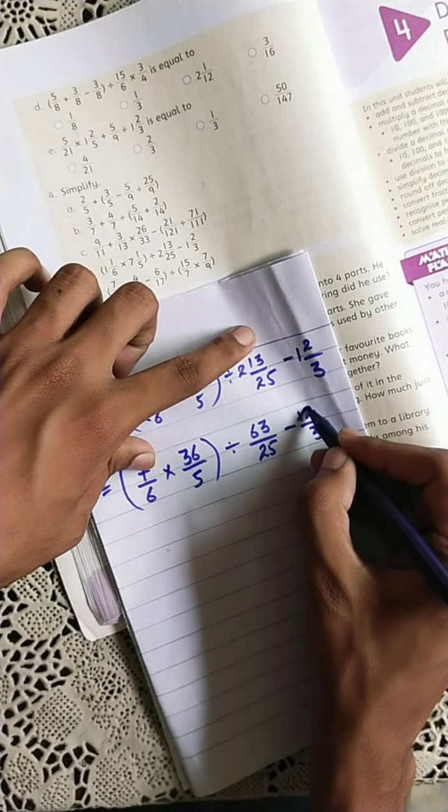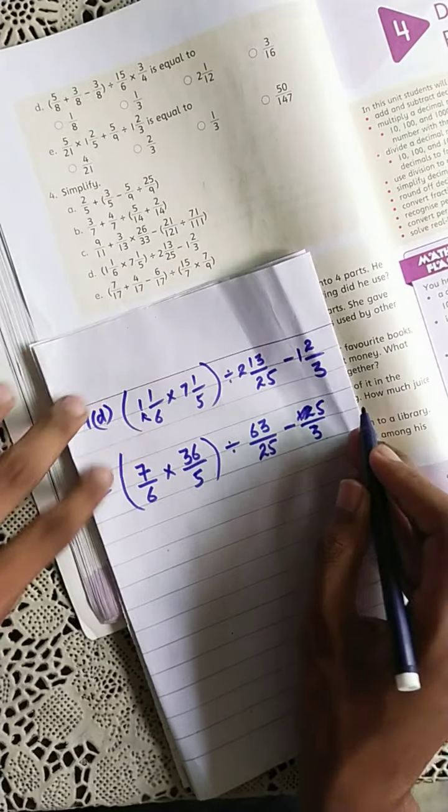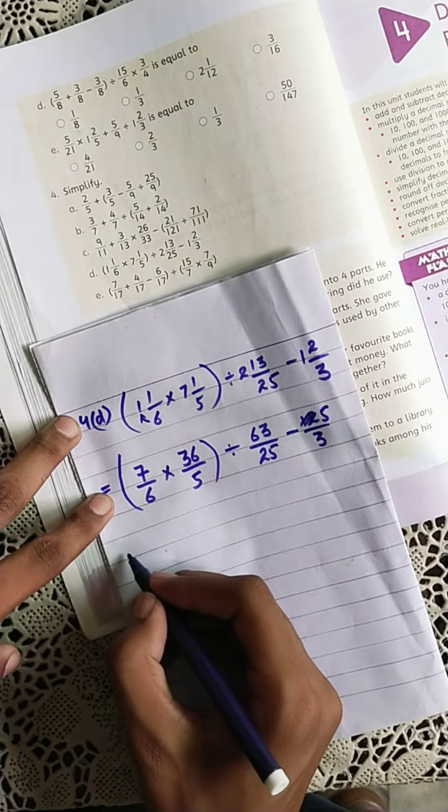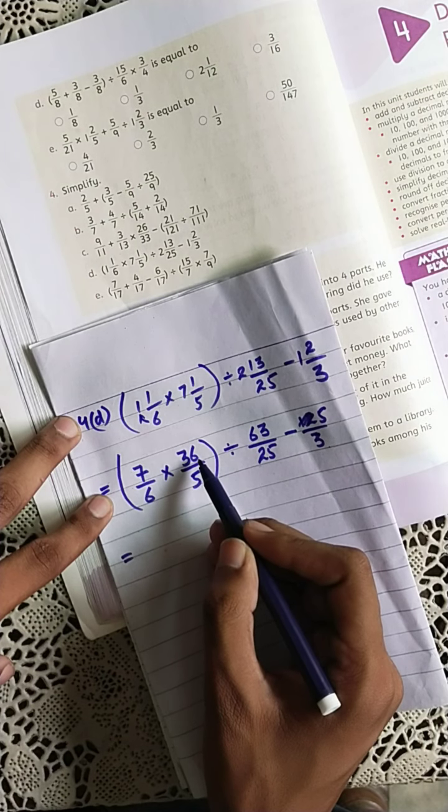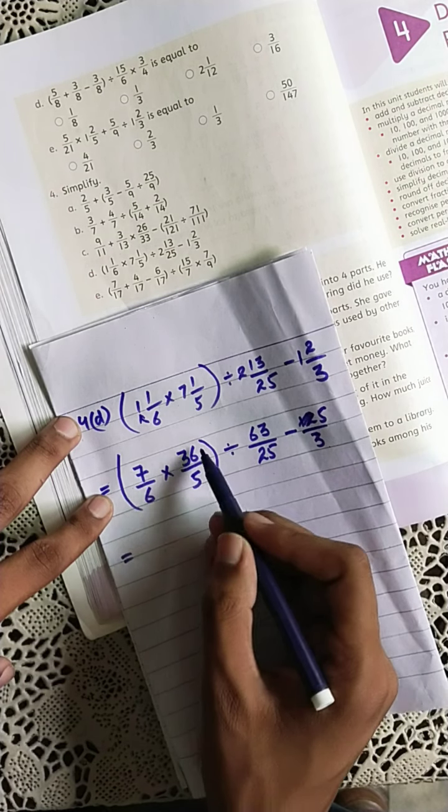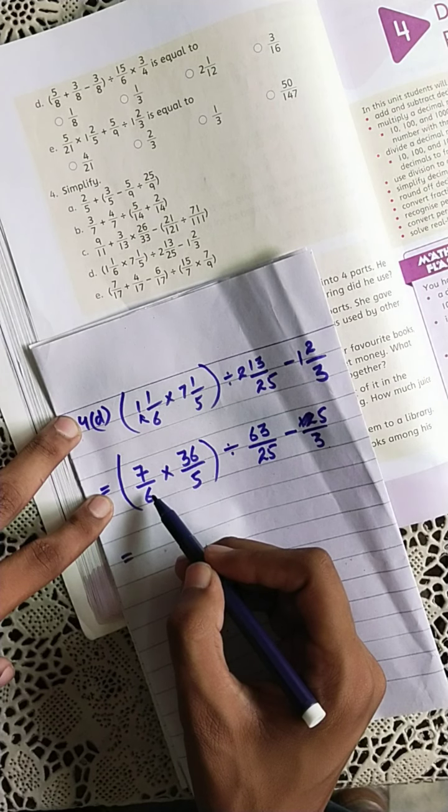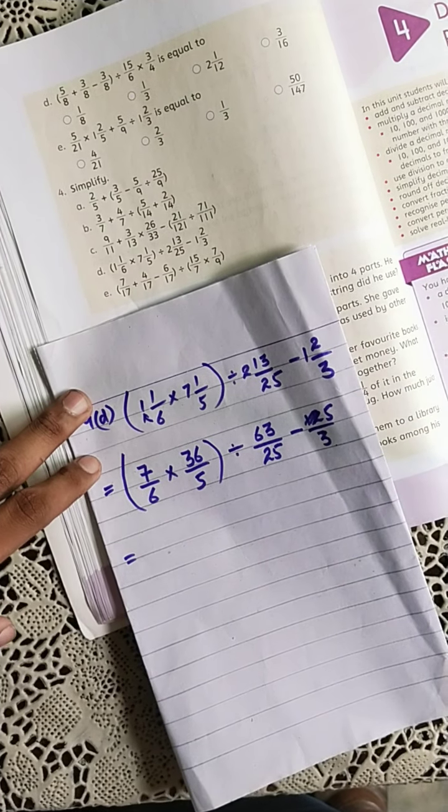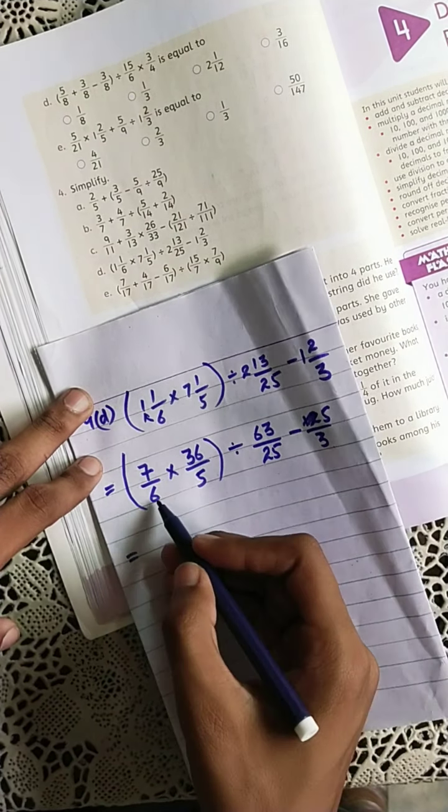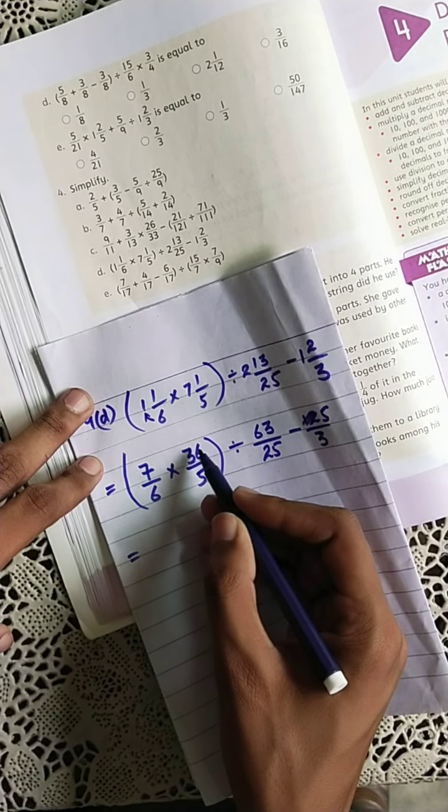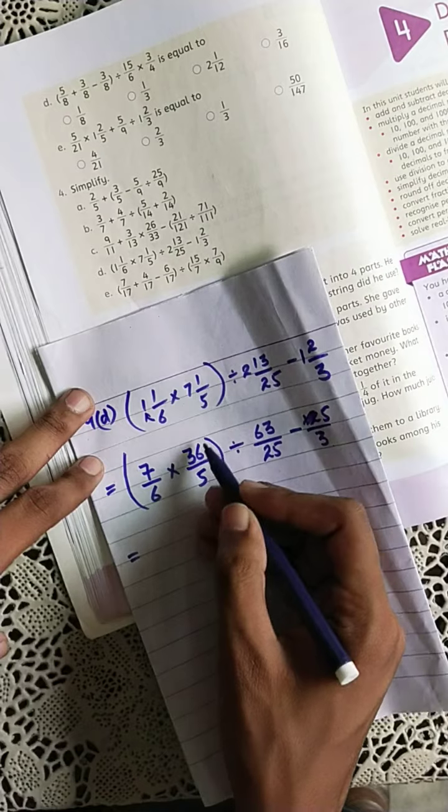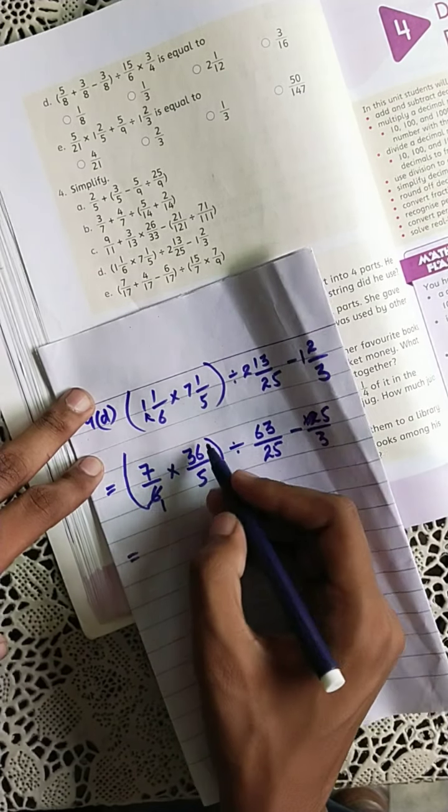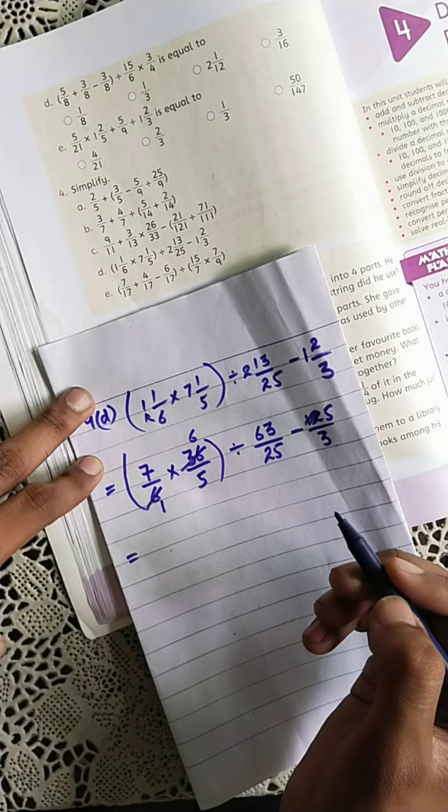So here we can write 5. Clear, now move. Now can this cancel out with this? Let's see. Yes, obviously this 6 will be cancelled out with this 36 because in the denominator and numerator of the second fraction have the same factor, 6 times 6.